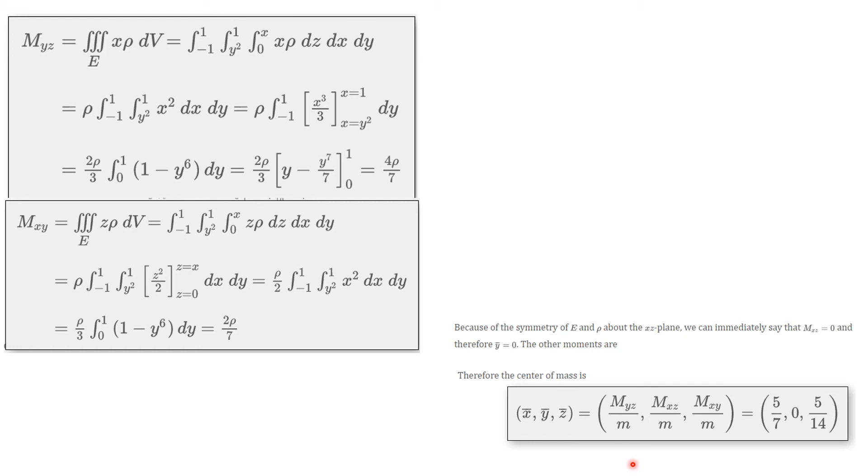x bar, y bar, z bar. I get this. And remember we had this one with 0 because of the symmetries in the problem. If you actually did the calculations, you would get 0 as well. And this is going to be 5 over 7, 0 and 5 over 14. A very good example. And I could ask you a problem such as this sometime in the future.